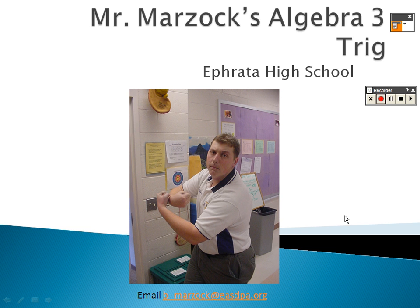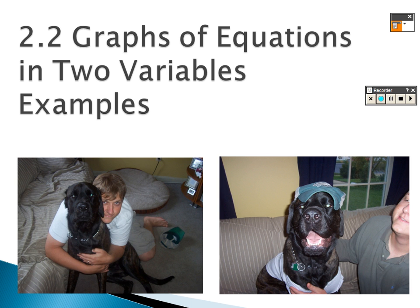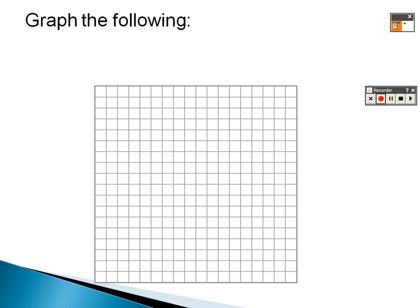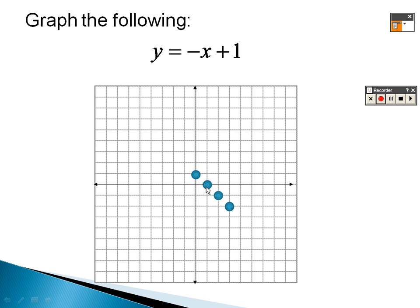We are on section 2.2 examples in trig, graphing equations with two variables. Starting simple: the y-intercept is 1, so plot a point up one. The slope is negative one, like negative one over one — so down one, right one. You can also go up one, left one to get the same straight line.